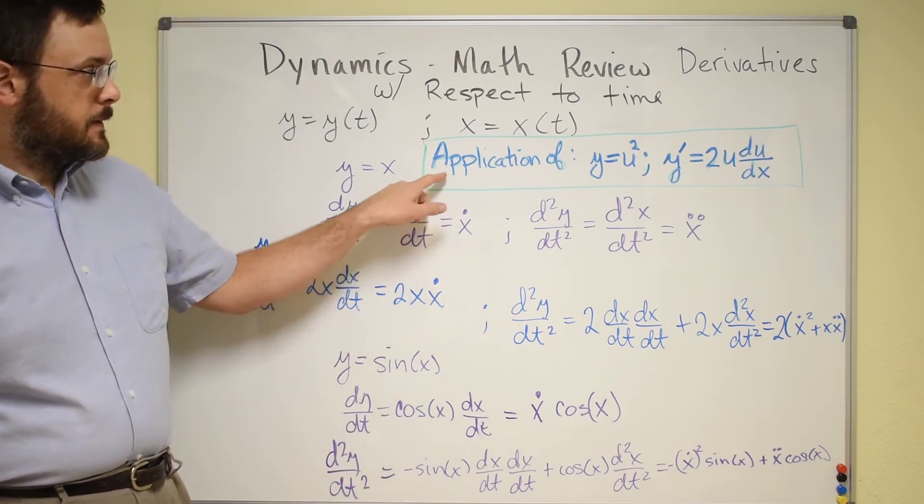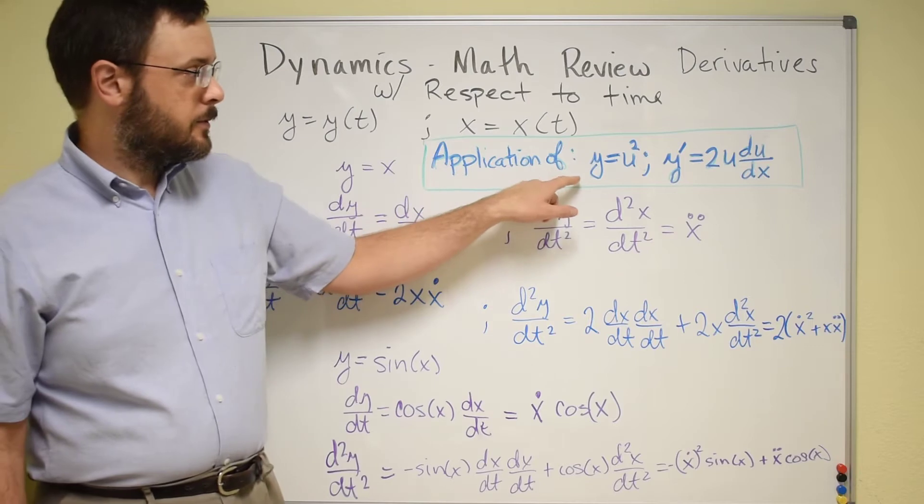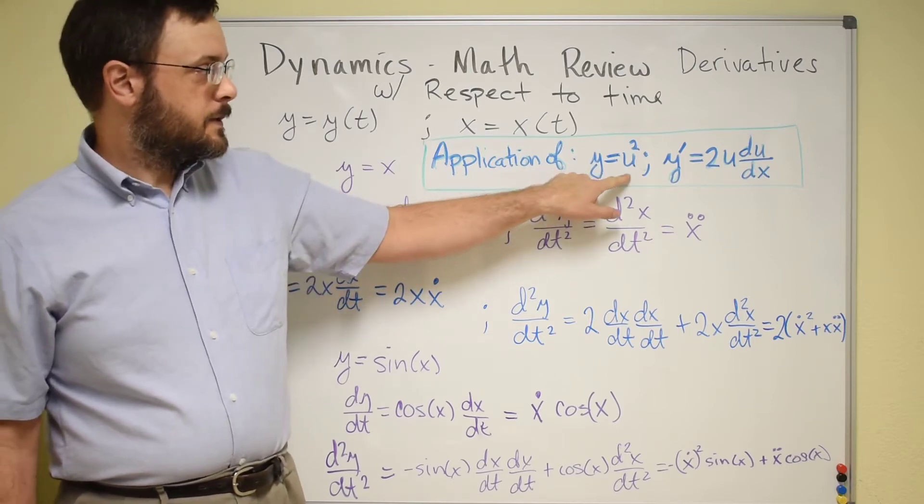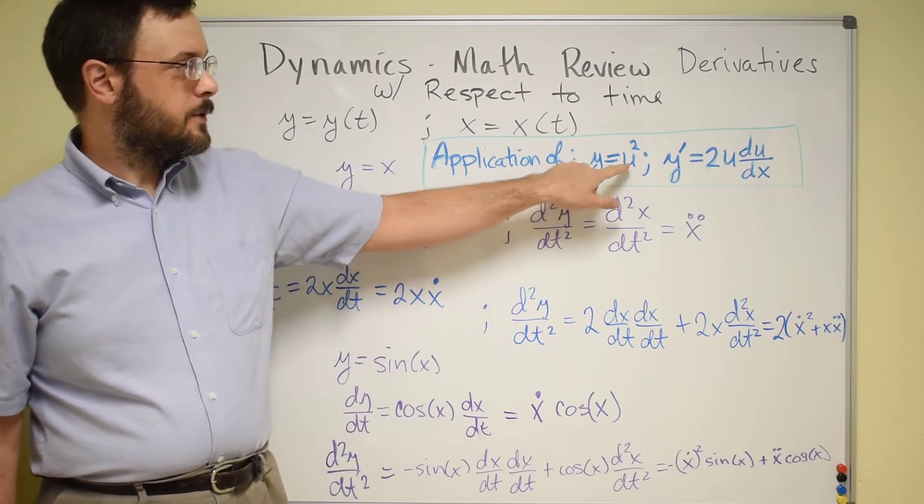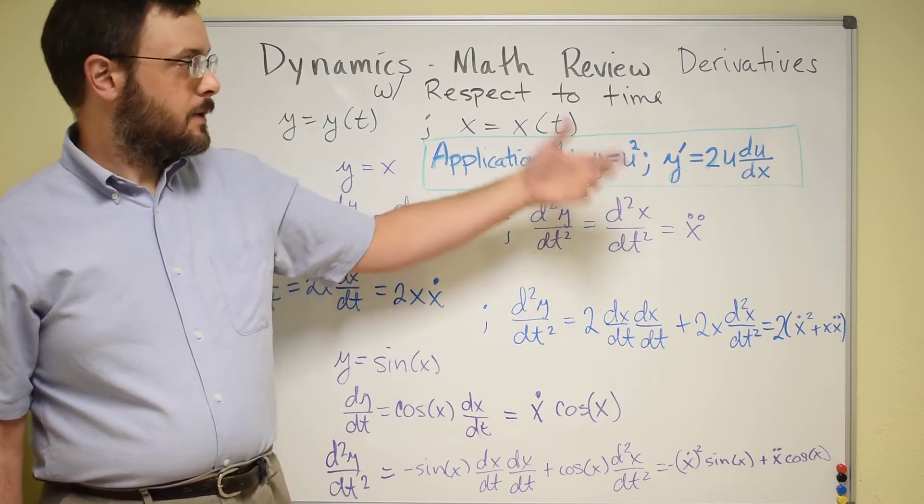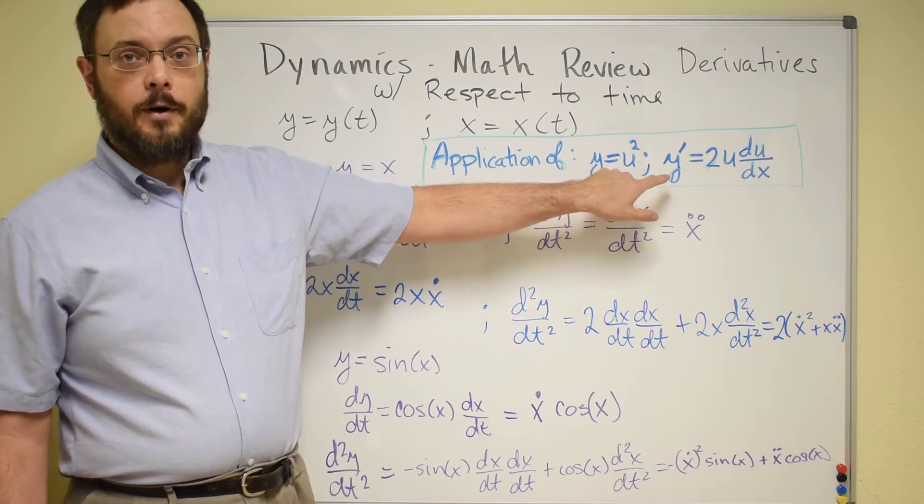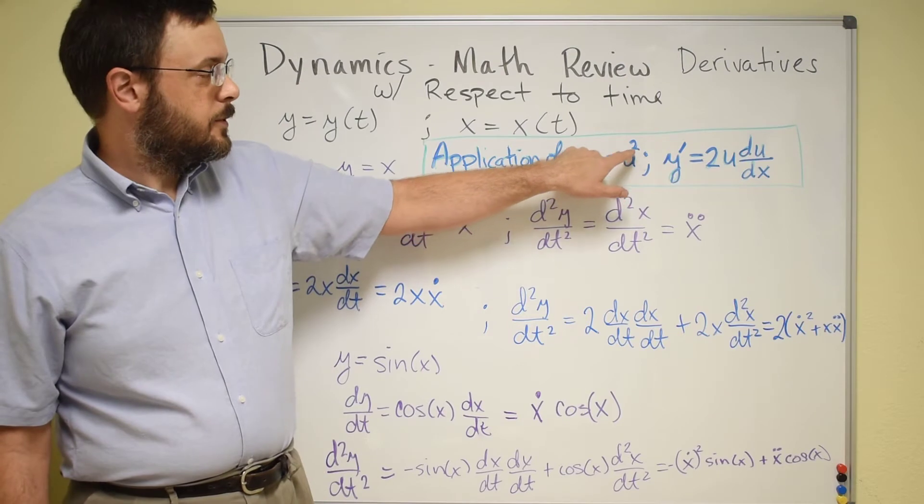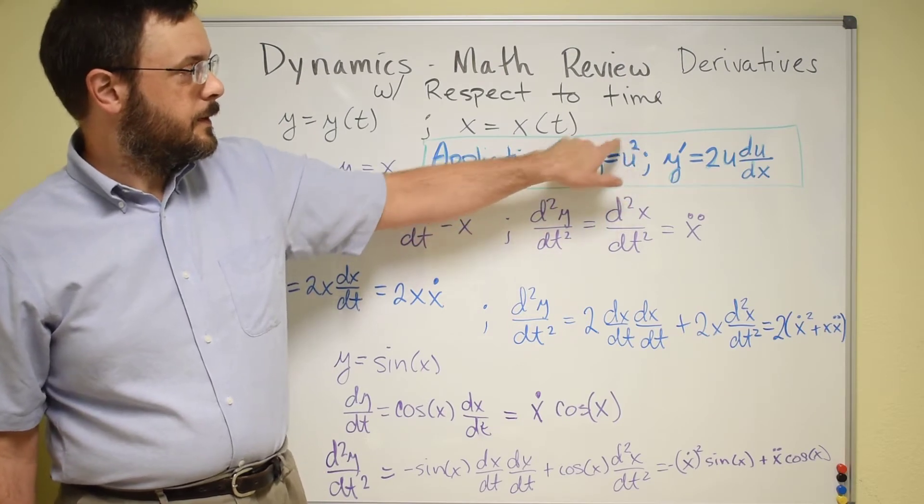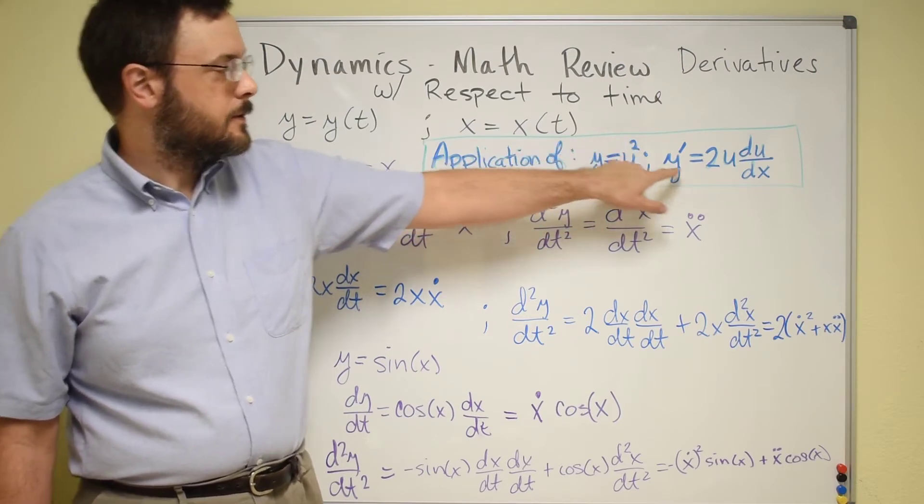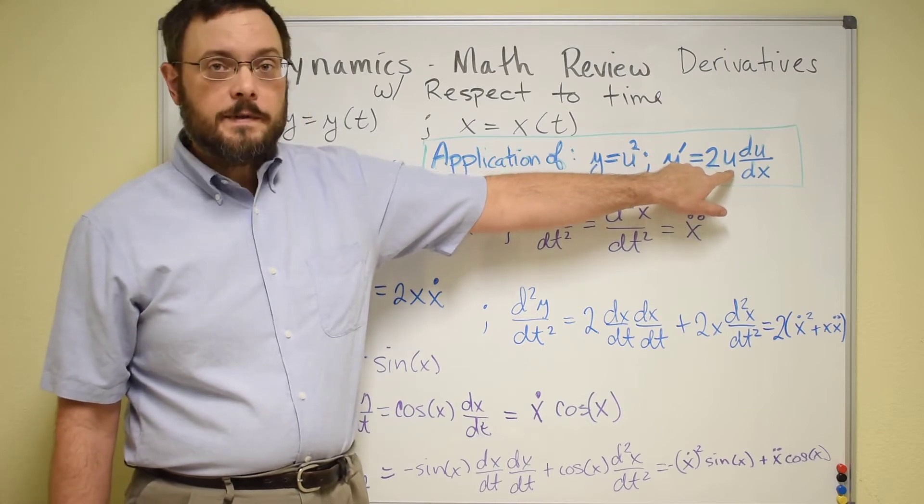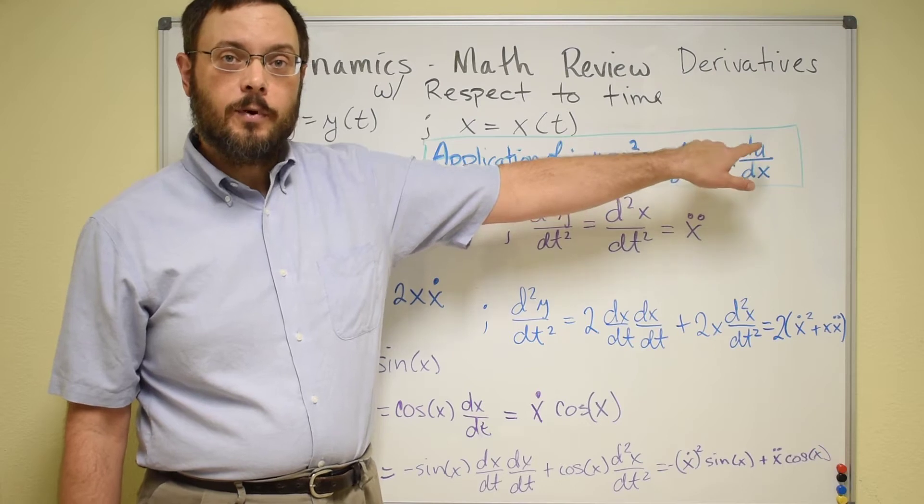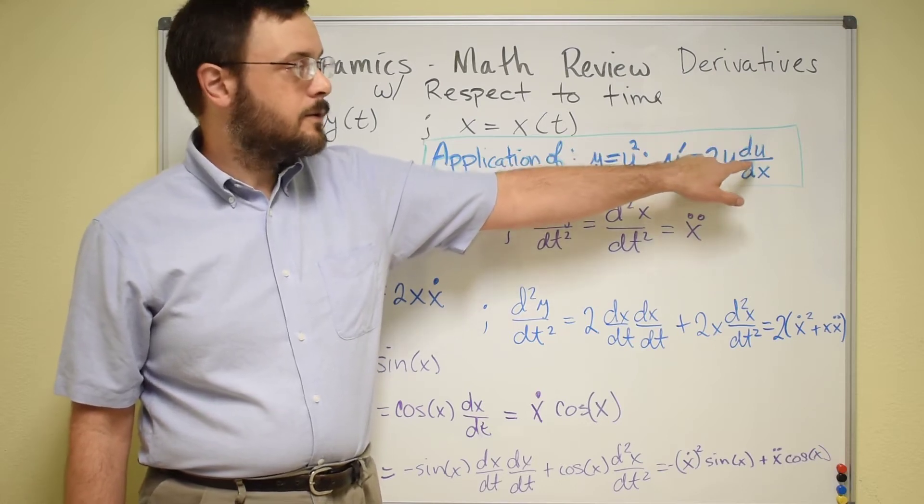So the idea is in calculus you're probably introduced to things like this: y is a function of x, u is a function of x, y equals u squared, and then you take a derivative of y, you get y prime which is dy/dx, and that's equal to the derivative of u squared, so it gives you 2u. But since it's u and not x, remember that you always had to have that u prime term or you might have written it as du/dx.